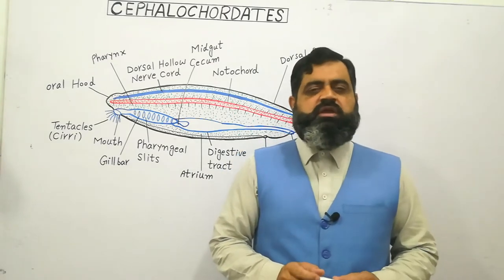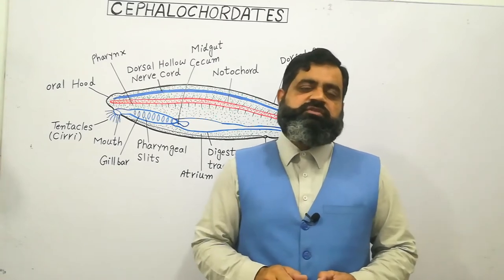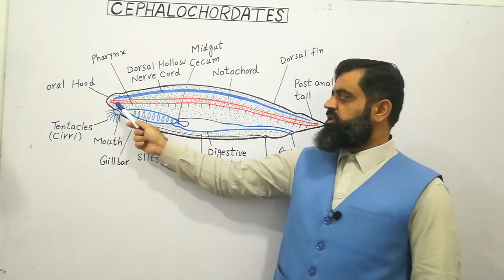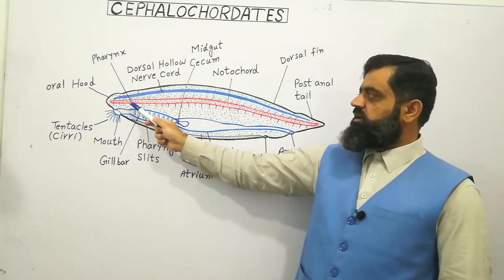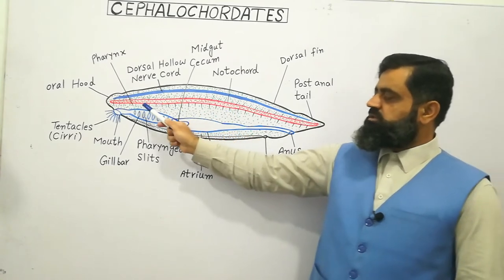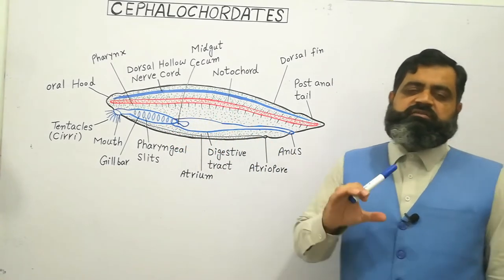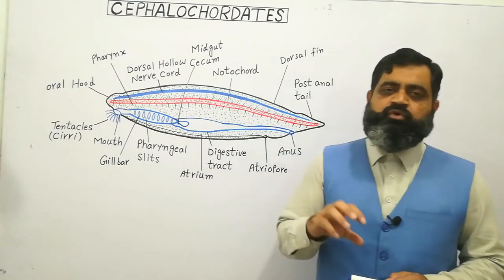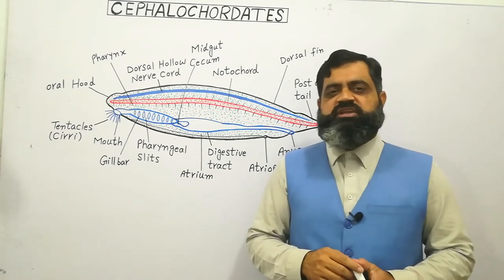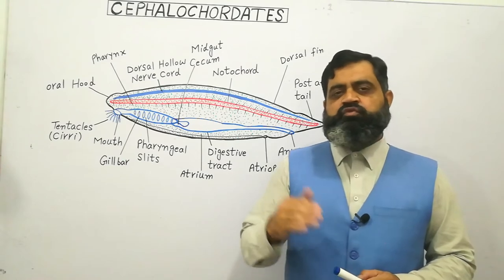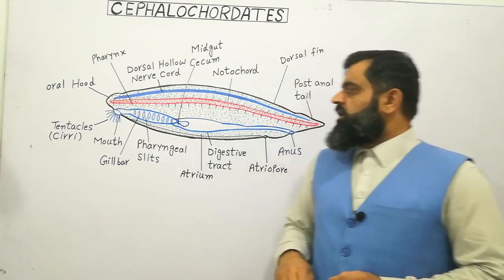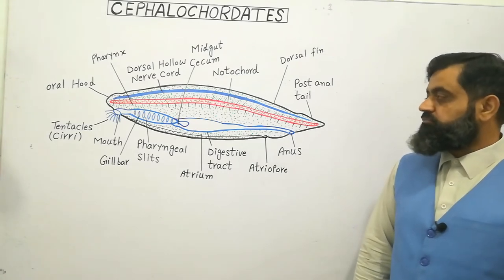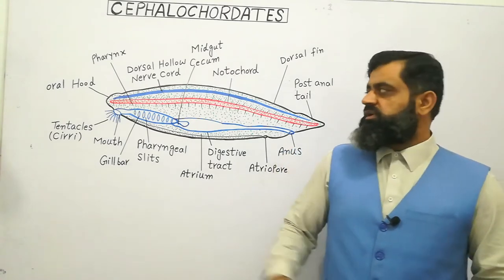Now we will discuss some important maintenance functions of this animal. First, we will discuss locomotion of the Cephalochordata. For locomotion, these animals have muscles arranged segmentally from the anterior to the posterior region, as you can see in this diagram — the small lines represent muscles located along the notochord. By contraction and relaxation, these muscles help the animal to move in the burrow in the sand. Usually they do not swim freely in the water; rather, they are buried in the sand and move in and out for feeding purpose.